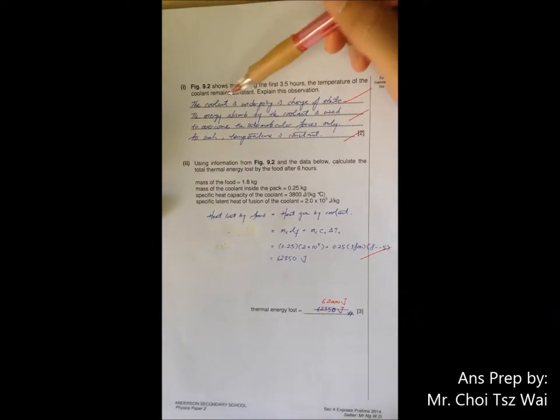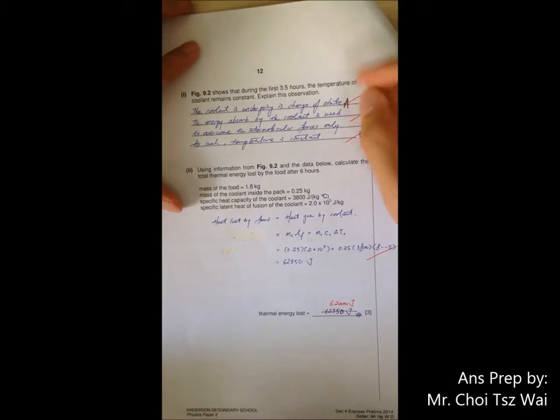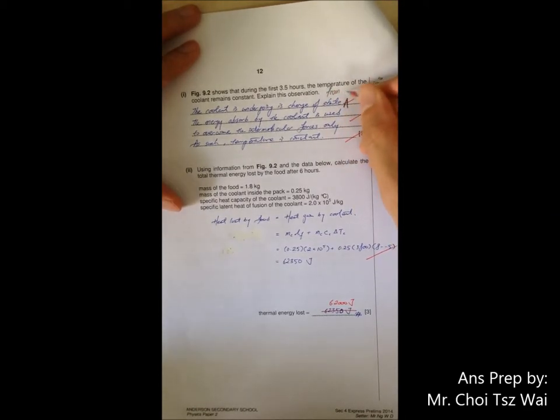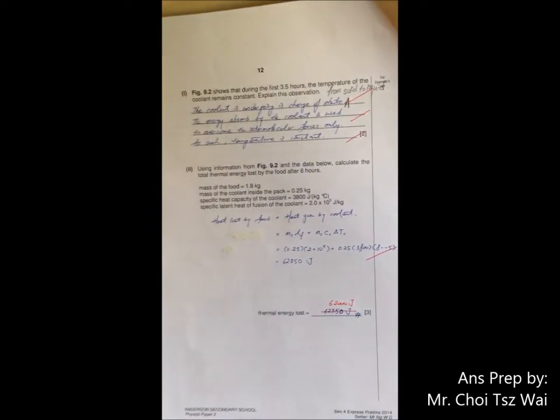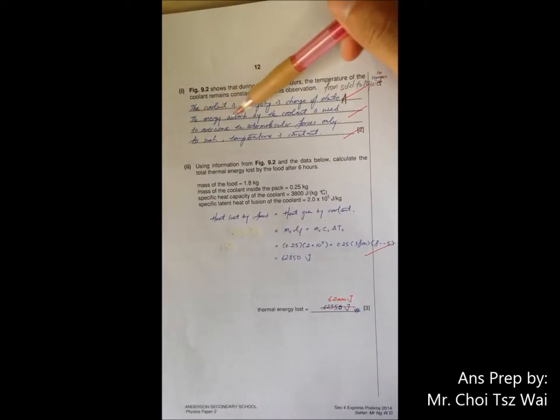Explain that the coolant is undergoing a change of state. Now don't be like me, be specific. Change from what to what. In this case it's changed from solid to liquid. So effectively it is melting, just mention the word melting. Then the second part of the answer, give a short explanation why during melting the temperature is constant. Just say something like, the energy absorbed by the coolant is used to overcome the intermolecular force only. So as such, temperature is constant. That's it.